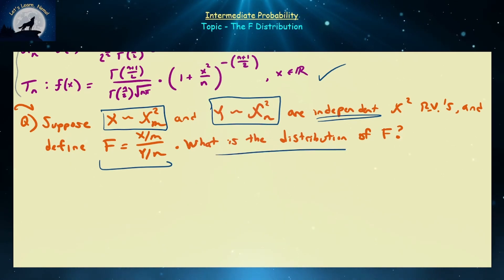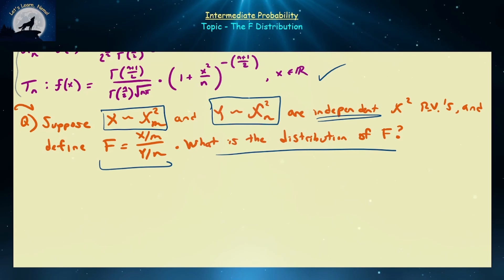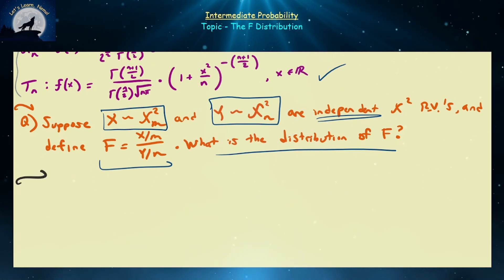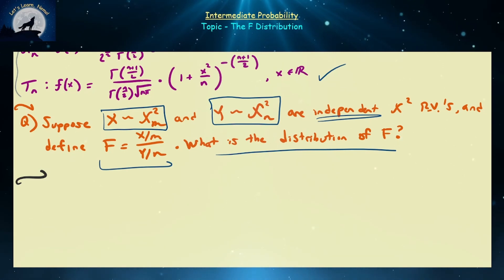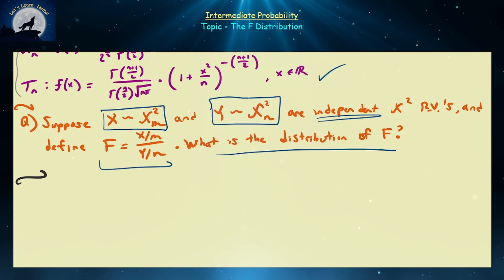The question we plan to answer today is: what is the distribution of this random variable F? We're going to call this the F distribution. What exactly is the probability density function for F, and what are some of the main properties we should know? The F distribution is very useful in the realm of equality of means across various groups, and also very useful for multiple linear regression.